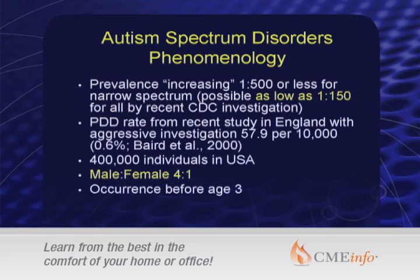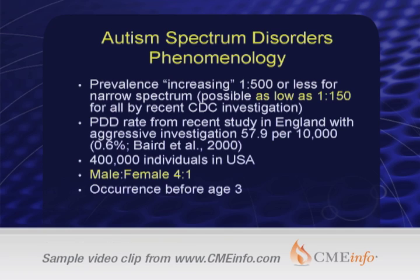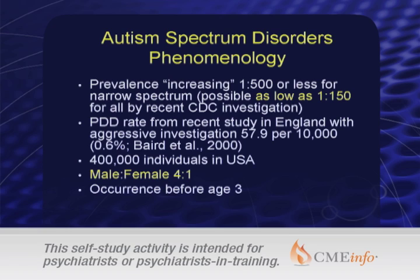PDD rate — in England, here are some numbers, with 400,000 individuals in the U.S. The main thing here is male to female is four to one for PDD autism spectrum disorders. As defined by the idea of a pervasive developmental disorder, it needs to occur before three years old. That's the period of most rapid development, and obviously if that's not impaired, then it's not a PDD picture.